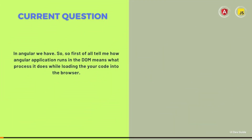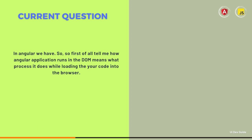Tell me how an Angular application runs in the DOM — what process it does while loading your code into the browser. First, the index.html file is loaded. Angular, by default, bootstraps the application and loads all the necessary modules and eagerly loaded modules from our app, then paints the view. The index.html file calls the main file, which calls the root component, usually app.component. Then if we have other routes and definitions, those are part of your modules.